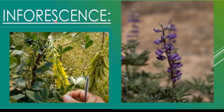In inflorescence, it will be raceme — unbranched, indeterminate type of inflorescence bearing pedicillate flowers. Pedicillate flower means having a short floral stalk called pedicel along its axis.